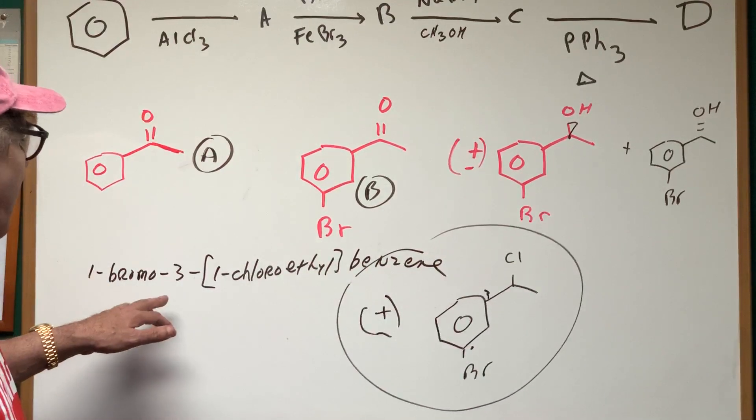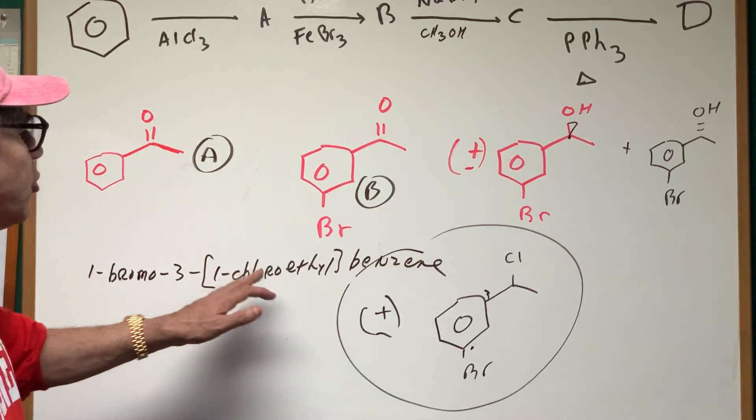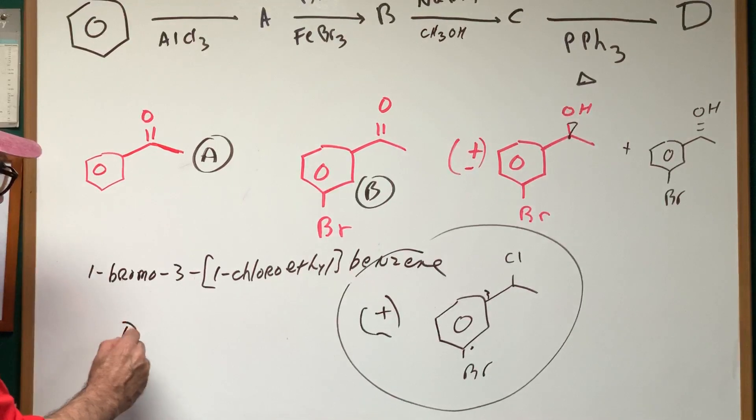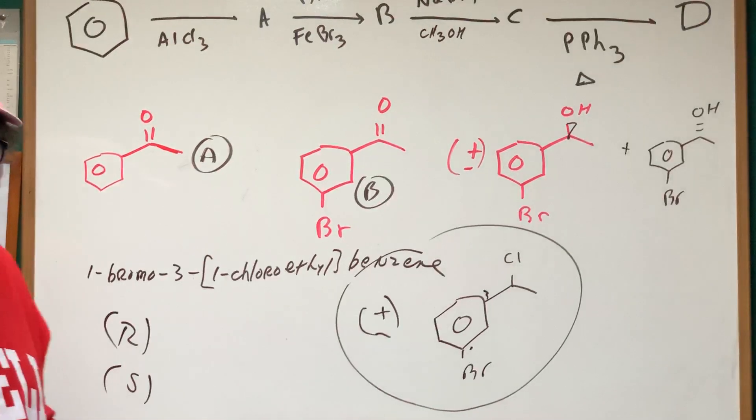So, this is a one-chloroethyl group, and then you would add the word benzene. So, you would get 1-bromo-3-(1-chloroethyl)benzene, and because it's plus and minus, it could have been either the R or the S enantiomer.